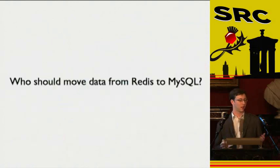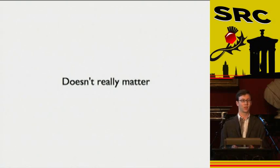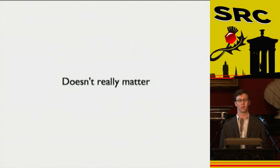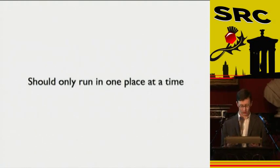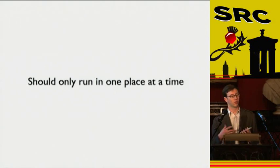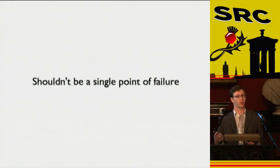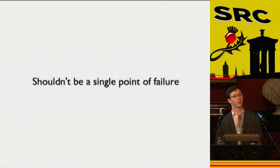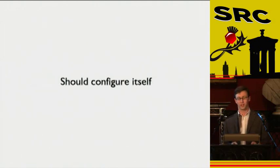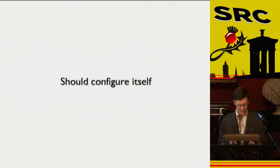It doesn't really matter who sends that data — it's not a really difficult job, not one that has to happen super quickly. It's just a background process: read some data from Redis and write it into the database. But what we don't want is multiple processes doing this at the same time, because then we'd have to write lots of locking code, and it gets really ugly. So it should be a single process that does this. But we should be isolated from failure — we don't want this process dying and suddenly there are no statistics for several days. And ideally, I don't really want to configure it, because if I have to configure it, it will go wrong.